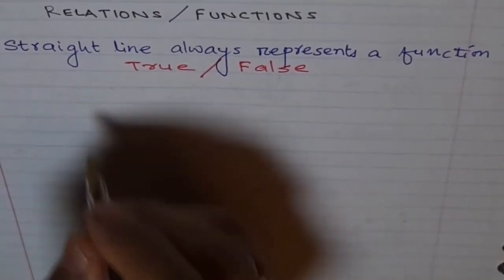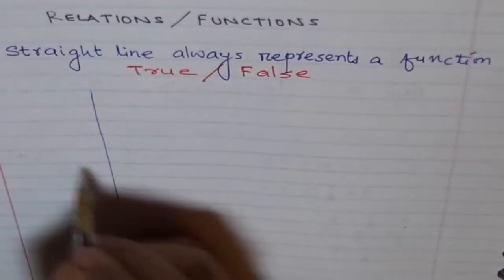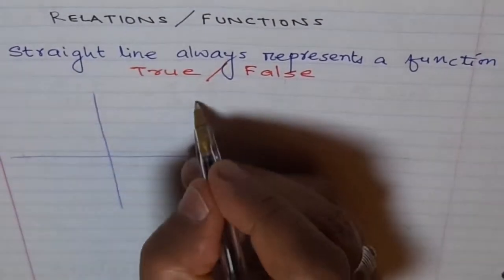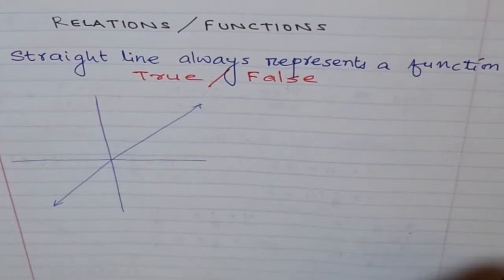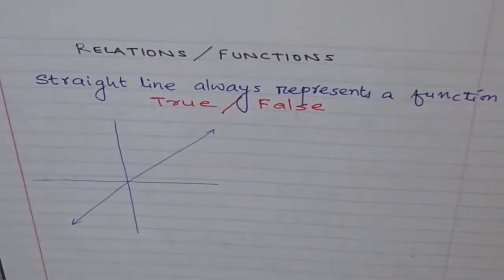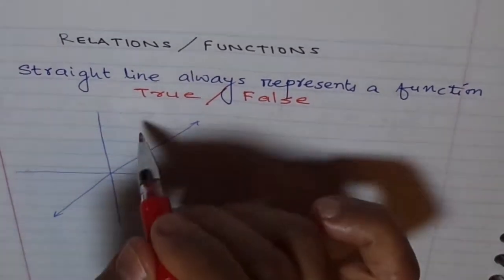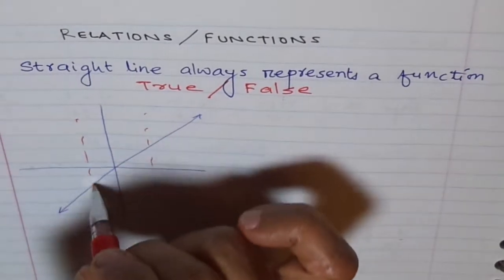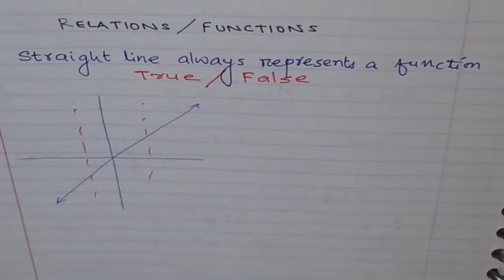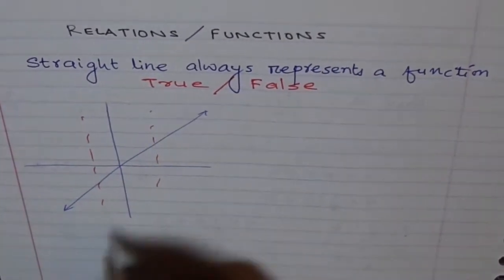Let's look at some straight lines. Let's say a straight line like this. Well, it passes the vertical line test, correct? If you draw a vertical line, it meets only at one point, so it represents a function. This is a function.